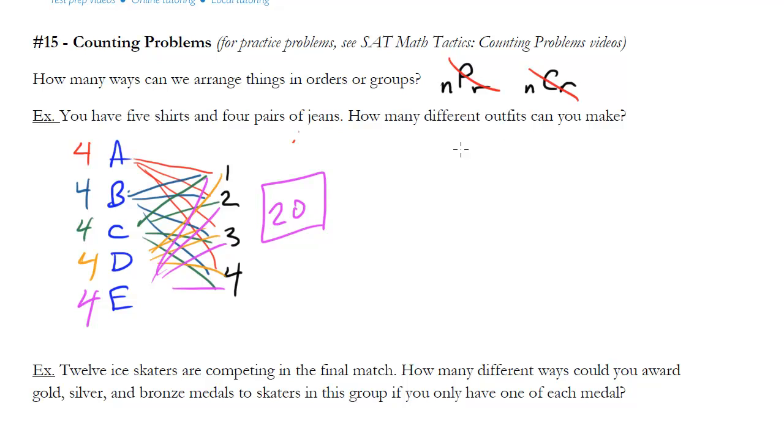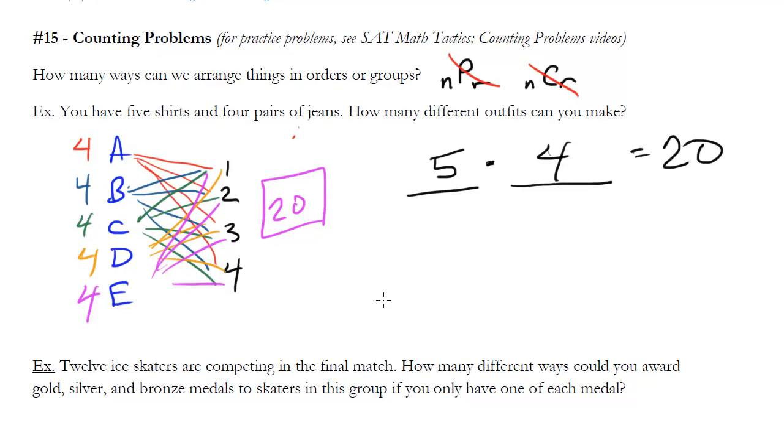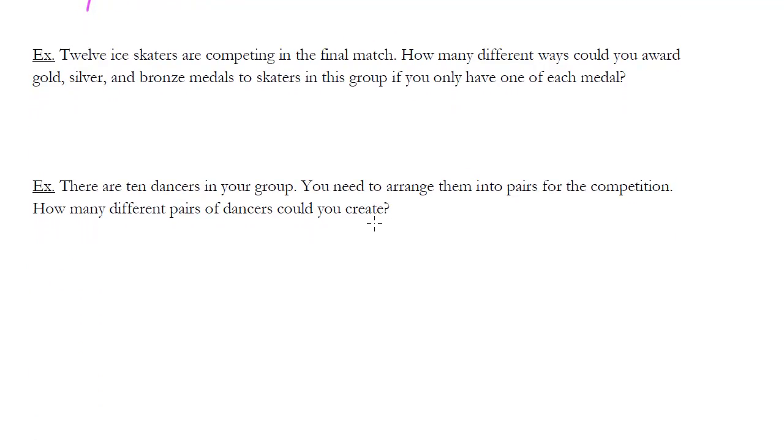But there's a shortcut. All you have to do is say, well really it's just five times four. And what you can do for these is you write the number of lines for the number of choices you've got, and then you say for the first choice how many choices do I have? Well I've got five, so I'll write five. And for my second slot, which is the number of jeans, how many choices of jeans do I have? Well I've got four. And then you just multiply the numbers, so five times four is twenty. And that's pretty much it. Let's just look at some examples, and obviously we'll have more in SAT Math Tactics.